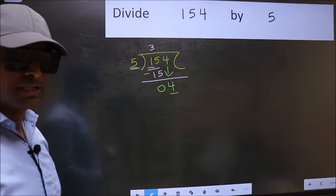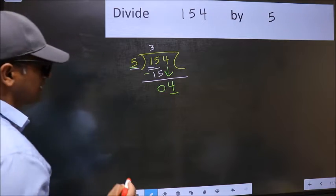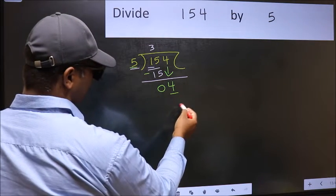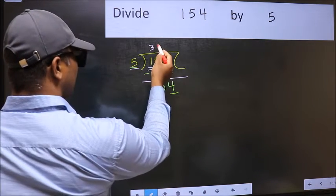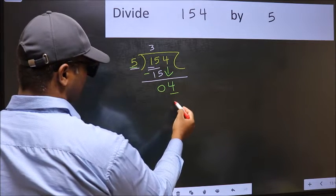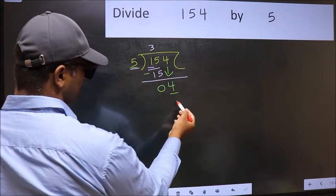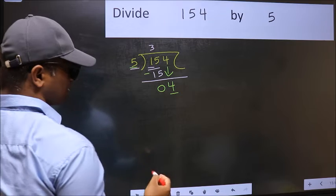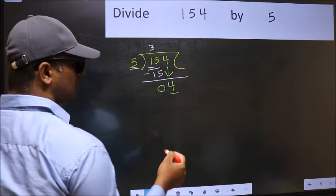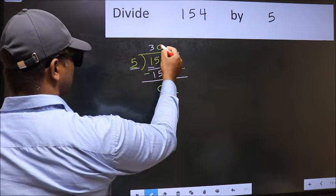Instead, what you should think of doing is, what number should we write here? If I take 1 here, I will get 5, but 5 is larger than 4. So what we should do is we should take 0.